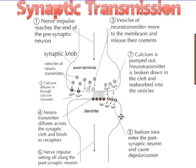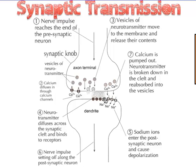Those are the basics of synaptic transmission. To give you a preview: what happens when drugs are involved? If a drug acts like a neurotransmitter and binds to the receptors, making more action potentials, then that drug would be somewhat of a stimulant. If the drug blocks the receptors so the neurotransmitter can't bind, then it's preventing the neuron from firing — and you have a drug such as a depressant.